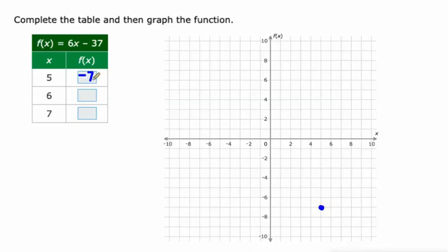6 times 6 is 36. Minus 37 is negative 1. 6, negative 1. And then 6 times 7 is 42. Minus 37. And that's 5. So, 7, 5. But again, you only need 3 or 2 points.